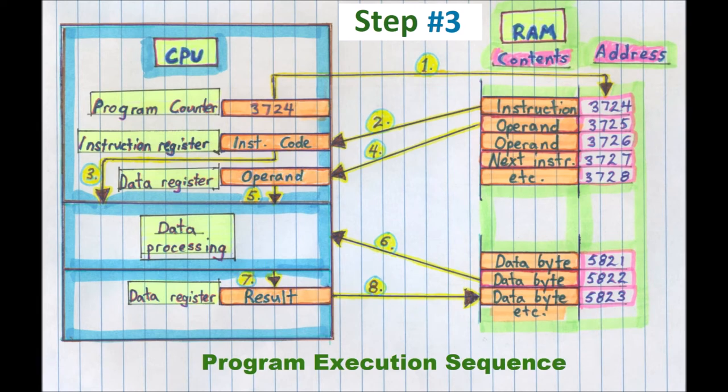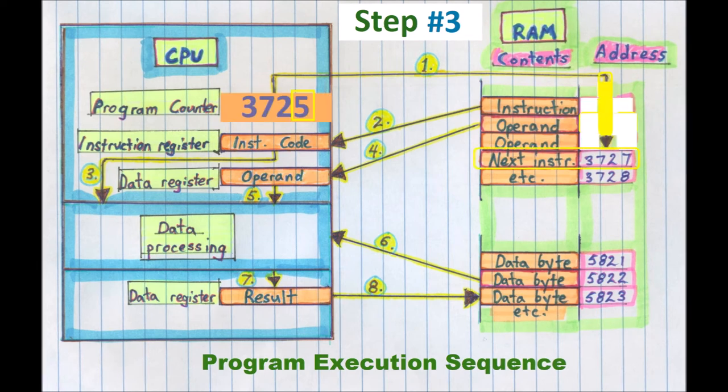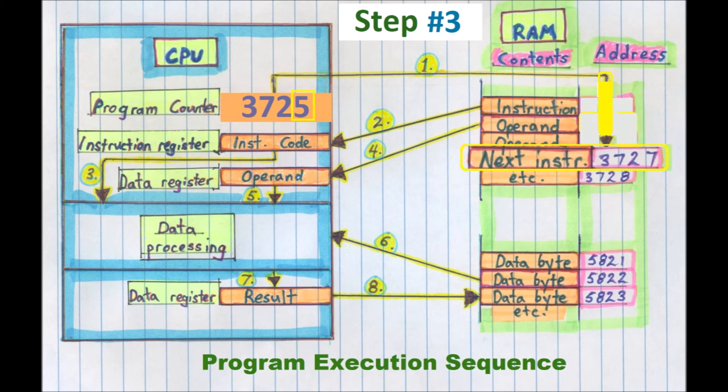In the meantime, the program counter has been incremented, rather increased, to the address of the next instruction code. The address of the next instruction is then output, and the sequence repeats from step 2.